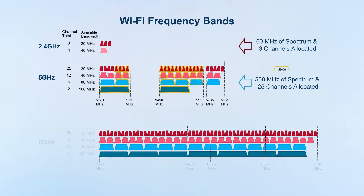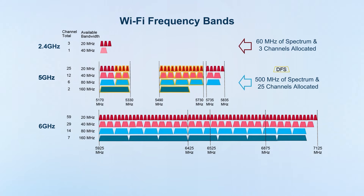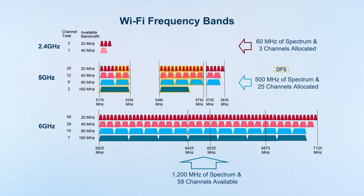The following data corresponds to different frequency bands. The width of the 6 GHz spectrum is 1200 MHz, which is the widest of the three, so its transmission speed is fast.